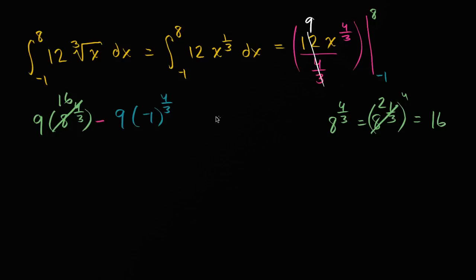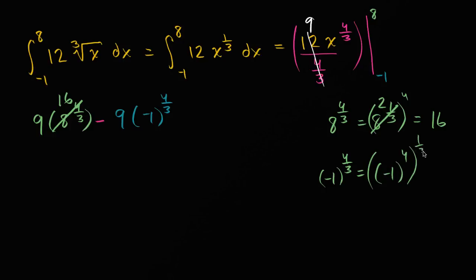Now, what is negative one to the 4/3? There are several ways to compute this. We can take negative one to the fourth power and then the cube root of that. Negative one to the fourth is just one, and one to the 1/3 power is just one. So negative one to the 4/3 equals one.